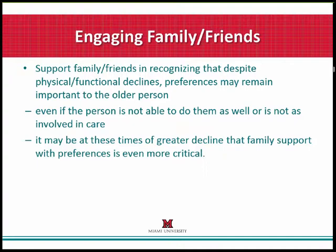It's also important to support family and friends in recognizing that despite physical and functional declines, preferences do remain important to the older person. Even if the person is not able to do them as well or is not as involved, it's at these times that family support with preferences is even more critical. When there's greater decline, even a small pleasure can be experienced, and support from staff and activities staff in helping to modify these important preferences to a person's current abilities is crucial.